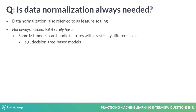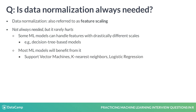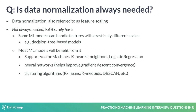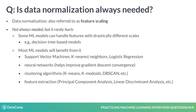Sadly, this is not the case for the majority of machine learning models you will often use, such as support vector machines, k-nearest neighbors, logistic regression, neural networks, or an entire suite of clustering and feature extraction algorithms. It is therefore a good practice to consider normalizing your data before passing it on to other components in your machine learning pipeline.